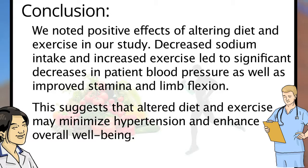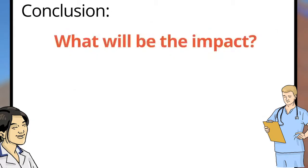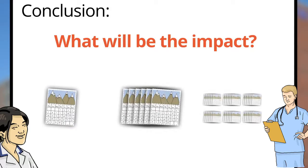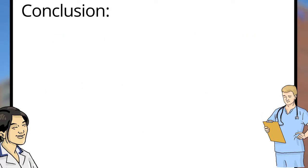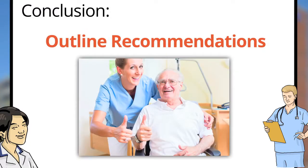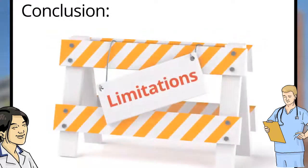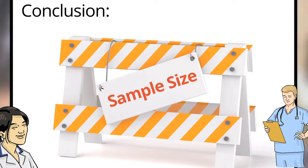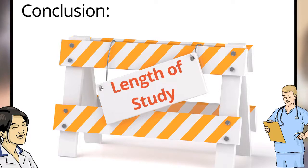This suggests that altered diet and exercise may minimize hypertension and enhance overall well-being. Of course, you'll want to significantly expand on this in your manuscript — to perhaps explain what impact your results may have on near-term, mid-term, and/or long-term clinical practice, and if applicable, to outline potential recommendations for practice or policy changes or future studies. This is also the place to discuss the limitations of your study, which among many possible factors are commonly related to sample size, missing data, and the length of time that subjects are observed.